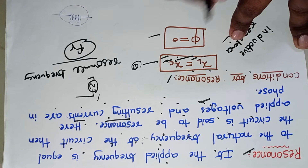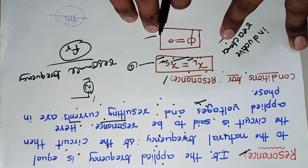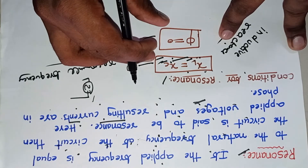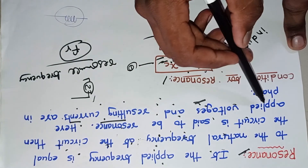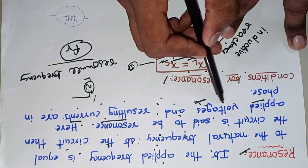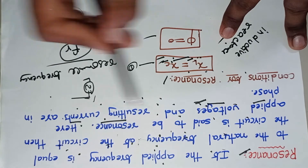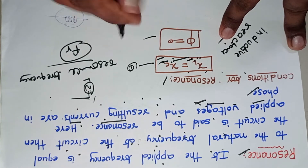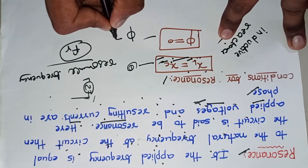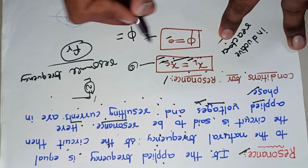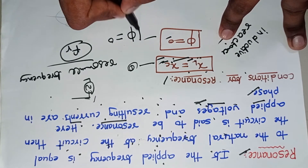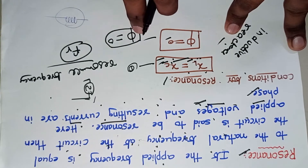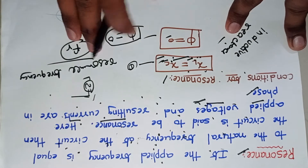One more condition: in a resonance circuit, the applied voltages and resulting currents are in phase. In phase means there is no phase difference. Phase is indicated as phi, and there is no phase difference means the phi value is zero. This is about the conditions for resonance.